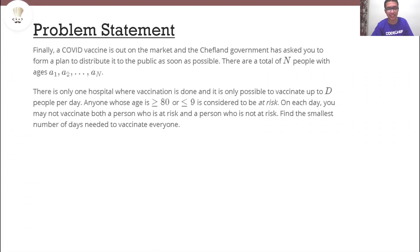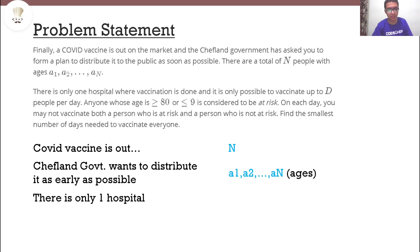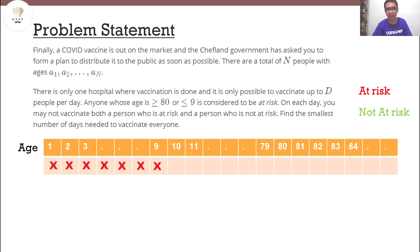The problem statement says that the COVID vaccine is finally out and the government wants to distribute it as early as possible. There are N people to be vaccinated and their ages are given. There is only one hospital and D is the maximum number of people that can be vaccinated per day. Based on their ages, people are either at risk or not at risk. If their age is less than or equal to 9, or greater than or equal to 80, they are at risk; otherwise they are not at risk.